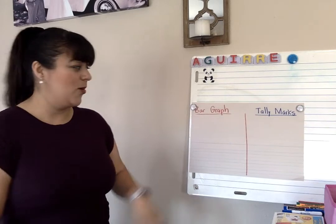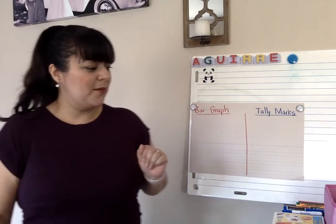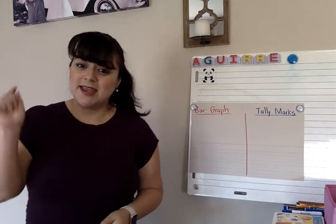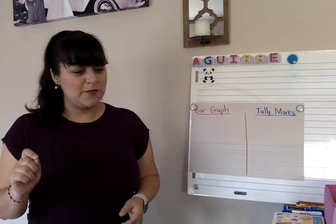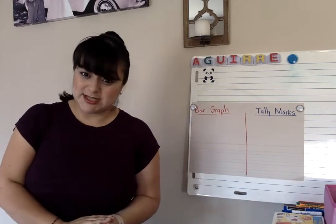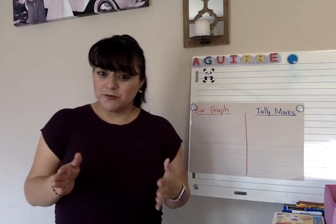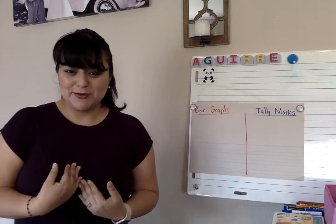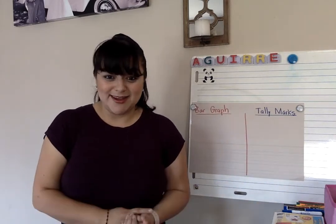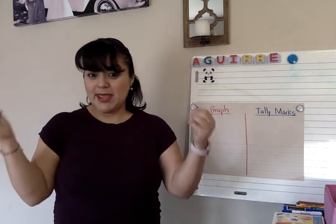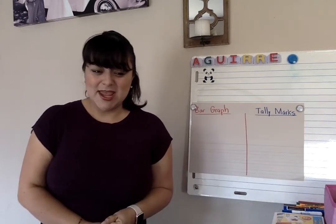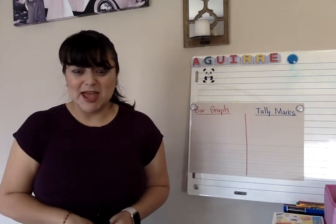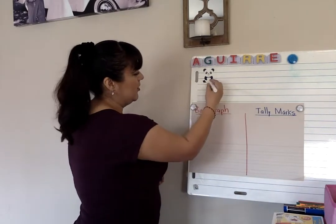Now that you understand about bar graphs and tally marks, today I'm going to show you how we're going to input information, put it into categories, and then count that information to determine which has more or which has less, or which one's a favorite or the least favorite. Your homework for today is to grab some toys that you have in your house. I went around and grabbed different toys — they could be small, big, whatever you like. We are going to be charting how many colors we have of each toy, so we are going to write down the color of our toys.